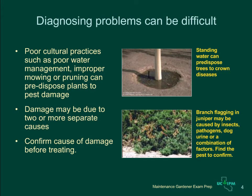Diagnosing problems can be difficult. Before treating for a pest, you need to confirm that the pest is causing the damage, and also that the pest is still present. Damage is often caused by poor cultural practices such as poor water management, such as the standing water around the tree trunk at top. Sometimes there may be more than one factor causing the damage. In order to diagnose a problem, you must have a history of fertilizer, herbicide, and water application, and also check carefully for signs of insects or pathogens. If significant numbers of pests are not found, the problem was probably caused by a non-living or abiotic disorder. If damaged symptoms develop suddenly and don't spread over time, this can be another sign that the problem isn't caused by a living pest.